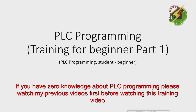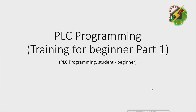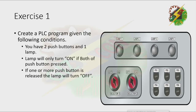For this lesson, we're going to have some PLC Programming problems and we will try to solve them using a PLC Program. Exercise 1: Create a PLC Program given the following conditions. First, you have two push buttons and one lamp. Second, the lamp will only turn on if both push buttons are pressed. Third, if one or more push buttons are released, the lamp will turn off.